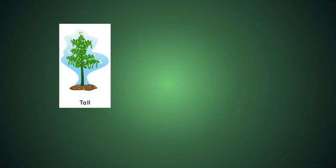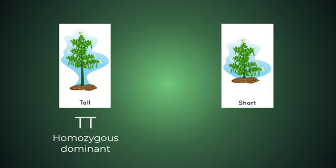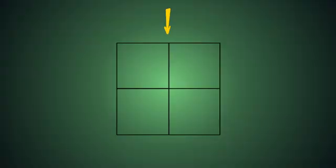Now, for the experiment, let's say we have a tall pea plant and a short pea plant. For this first experiment, the tall plant has a homozygous dominant genotype — big T, big T — and the short plant is homozygous recessive — little t, little t. We're going to cross these two plants, and this is where the Punnett square comes in handy.